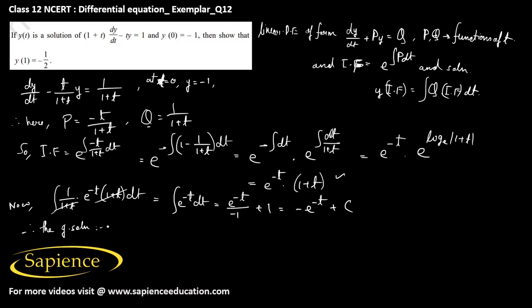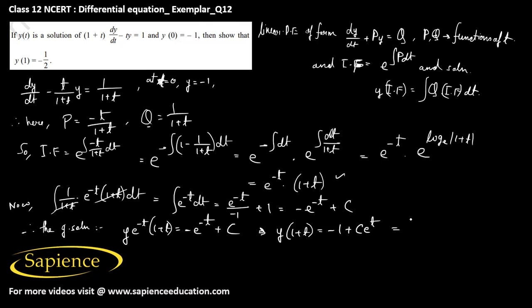Therefore the general solution is y times e to the power of minus t times (1+t) equals minus e to the power of minus t plus c. Dividing through, this becomes y times (1+t) equals minus 1 plus c·e to the power of t, or equivalently y of t equals (c·e to the power of t minus 1) divided by (1+t).